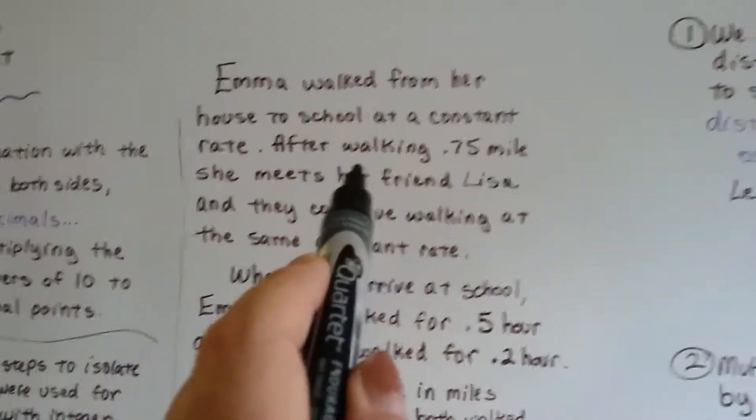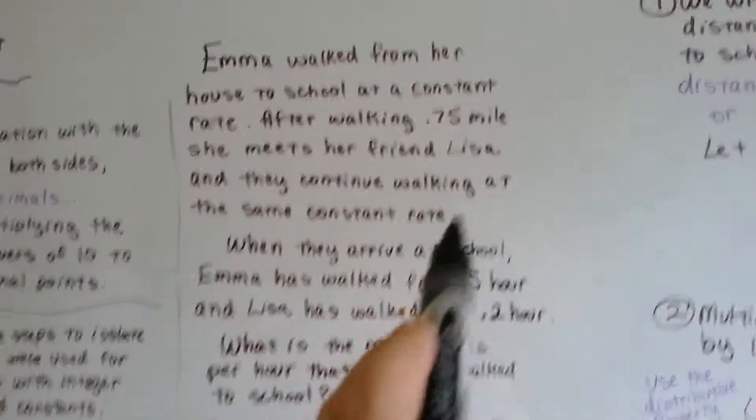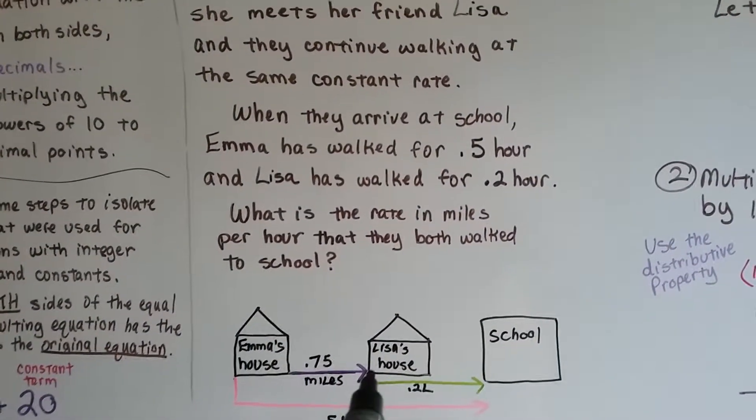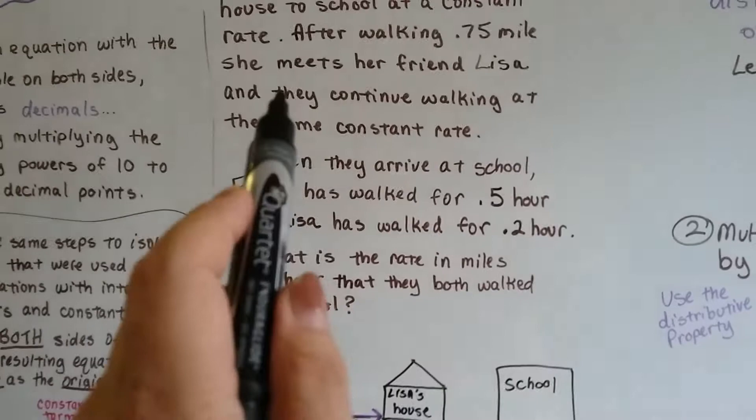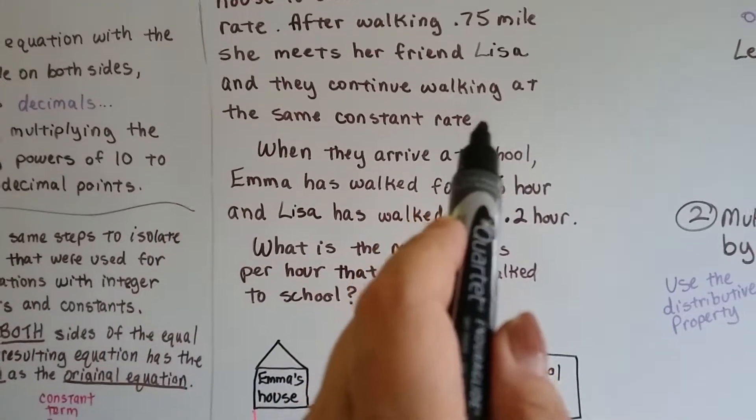After walking .75 miles, she met her friend Lisa. So now they went .75 and they're at Lisa's house. And they continued walking at the same constant rate.